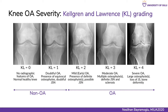In clinical practice, OA severity from knee radiographs is evaluated based on the Kellgren and Lawrence grading system. The grade varies from 0 to 4, correlating to increasing severity of OA. The international diagnostic threshold for radiographic OA is KL grade 2 — that is, KL less than 2 is defined as non-OA and KL greater than or equal to 2 is classified as OA, which we are interested in in this work.